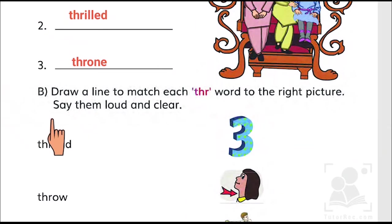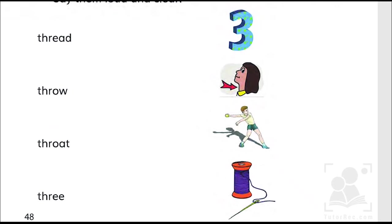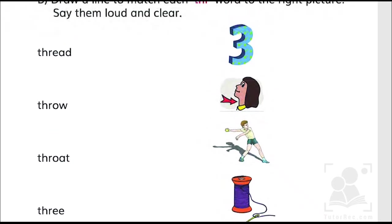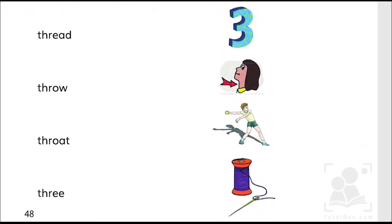In the next one, we have draw a line to match each word to the right picture. Let's do it. The pictures we have is of three, throat, throw, and thread. So let's combine and match: thread, throw, throat, and three.